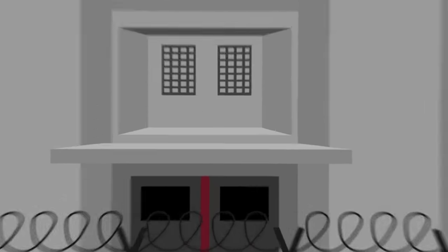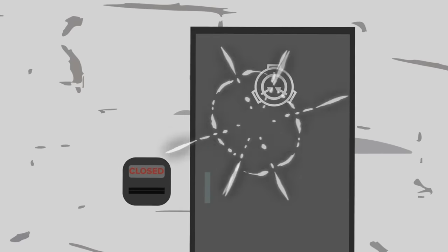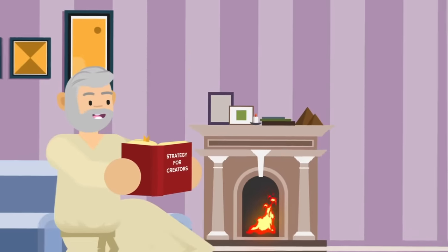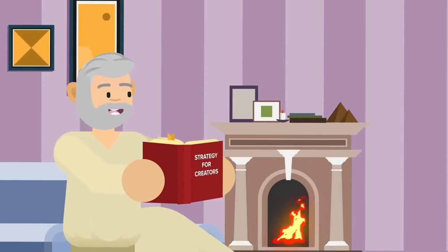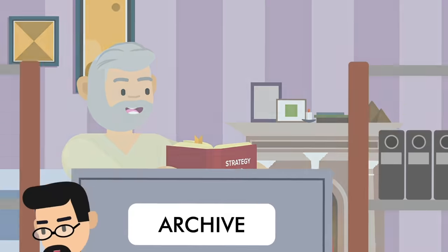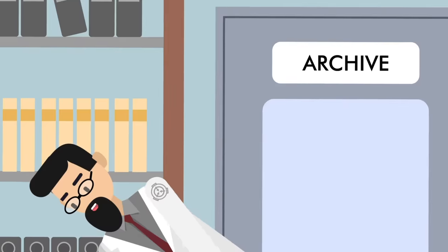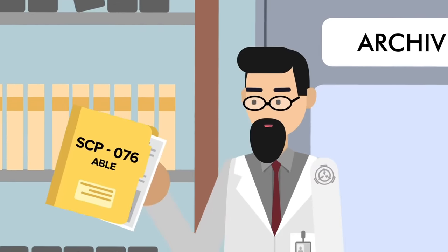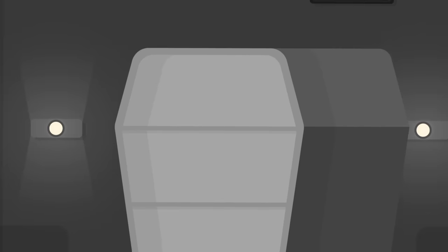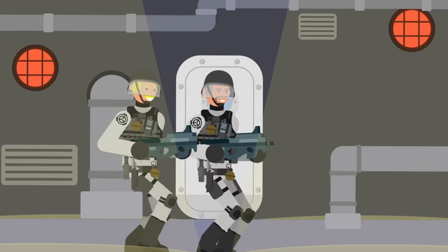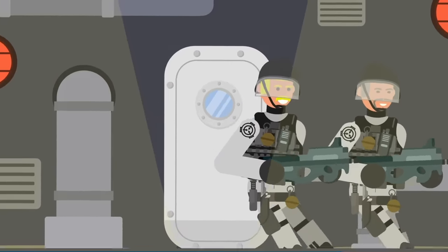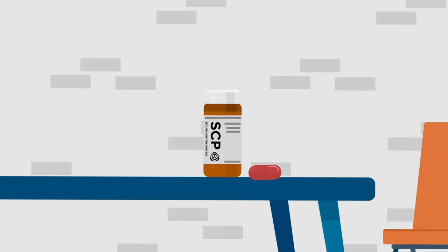The SCP Foundation has a reputation for cold, inhumane conditions, but being contained as an anomalous human doesn't mean your stay inside a secure facility has to be as bad as it might seem at first. Of course, more dangerous anomalous entities, such as SCP-076, codenamed ABLE, are locked away in a containment chamber outfitted with maximum security precautions, and guarded by the Foundation's most well-trained and heavily armed personnel.